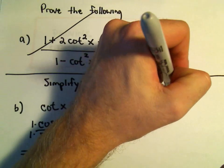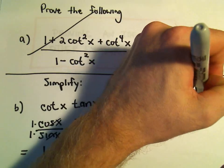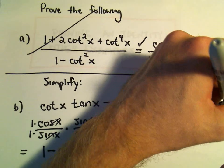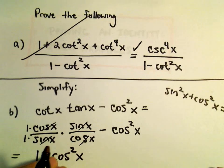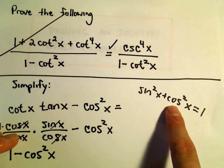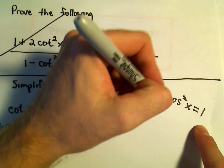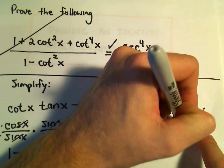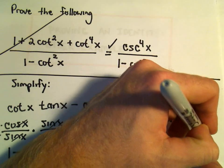But recall our identity that sine squared x plus cosine squared x equals 1. So if we simply subtract the cosine squared from both sides, we'll get that sine squared x equals 1 minus cosine squared x.